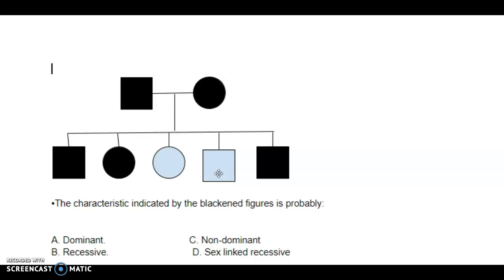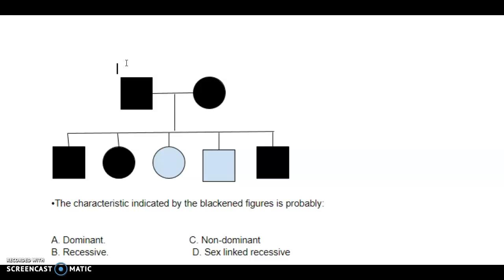That leaves dominant. There are two ways to have a dominant trait: they could be homozygous dominant (big letter, big letter) or heterozygous (big letter, little letter). If they were homozygous dominant, everybody would only get big letters and everybody would have the trait — that wouldn't work. But if they were heterozygous, we'll use big D, little d for the disease, so dad is Dd and mom is Dd.